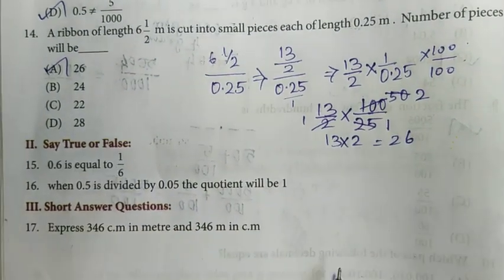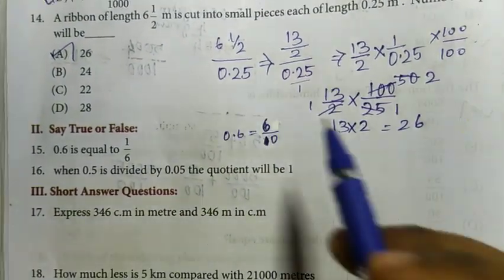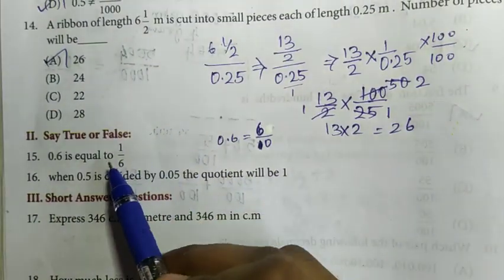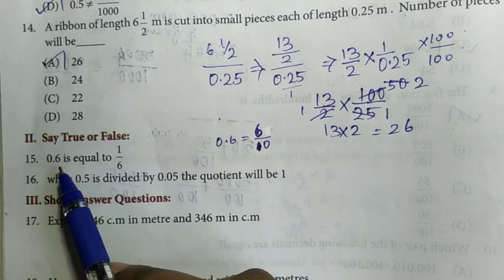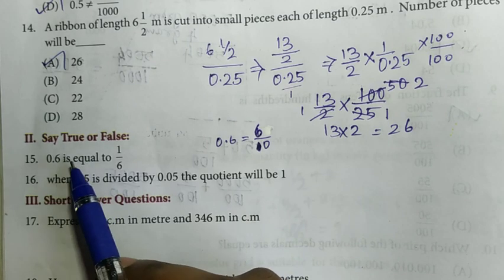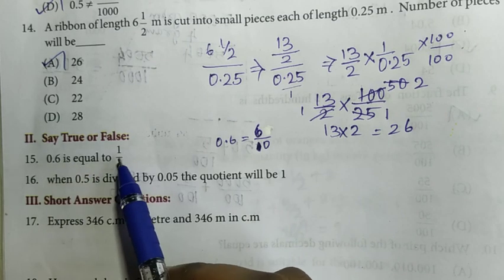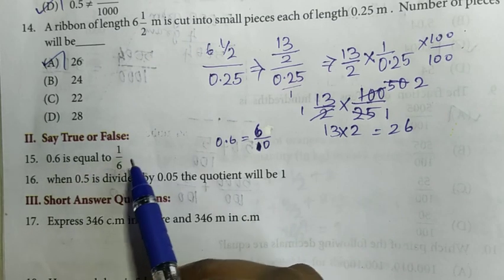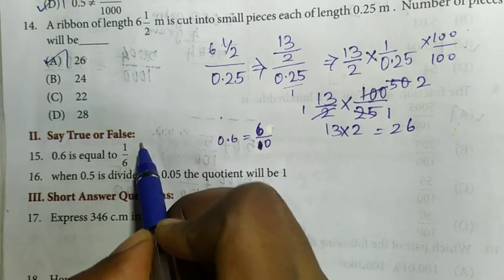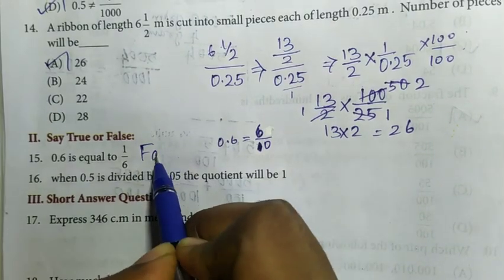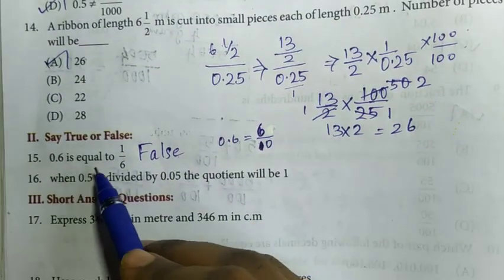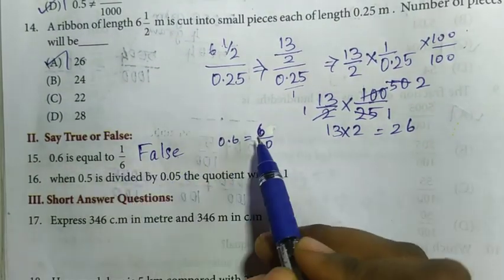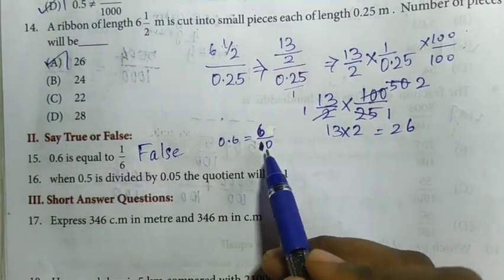Say true or false. 15th question: 0.6 is equal to 1 by 6. Answer is false, because 0.6 is equal to 6 by 10.